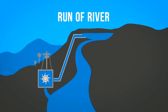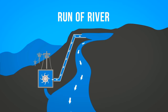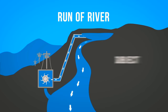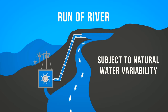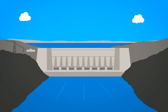The second form of hydroelectricity production is run of river hydro. Run of river still uses turbines and generators, but relies on natural water flow rates of rivers, diverting just a portion of the water through turbines. Because run of river hydro is subject to natural water variability, it is more intermittent than dammed hydro.